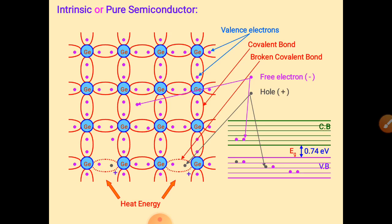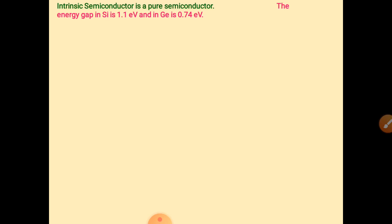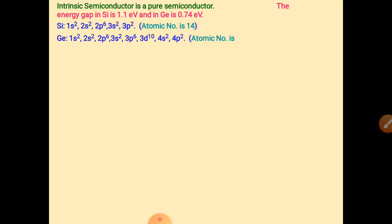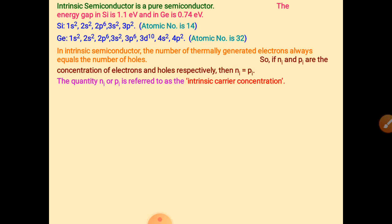An intrinsic semiconductor is a pure semiconductor — with no impurity added. The energy gap in silicon is 1.1 electron volt and in germanium is 0.74 electron volt. Silicon has atomic number 14 with configuration 1s2 2s2 2p6 3s2 3p2. Germanium has atomic number 32 with configuration 1s2 2s2 2p6 3s2 3p6 3d10 4s2 4p2.